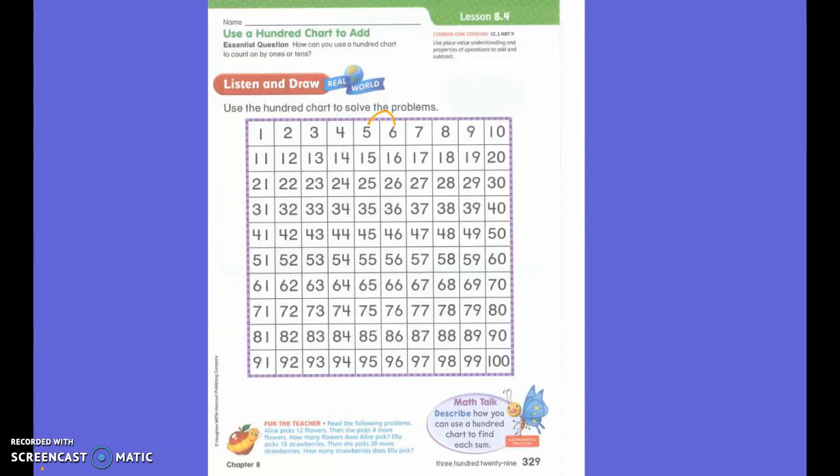How can you use a 100s chart to add 10s? You're right. If I'm at 37, to add 10 more, I move down 1. I move down in the column.